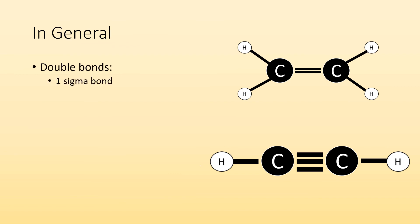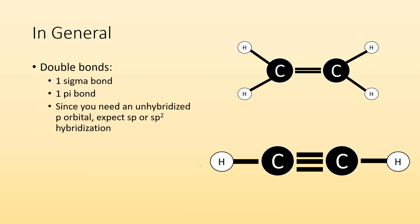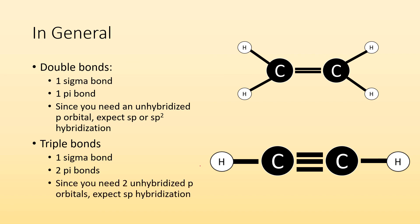So in general, double bonds involve one sigma bond and one pi bond. Since you need an unhybridized p orbital, you can expect either sp or sp2 hybridization, since both leave you with at least one unhybridized p orbital. Triple bonds have one sigma bond and two pi bonds. Since you need two unhybridized p orbitals, you're going to expect sp hybridization, because that's the only one that gives you two unhybridized p orbitals left over.